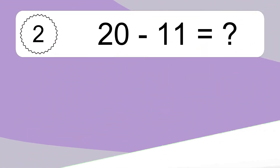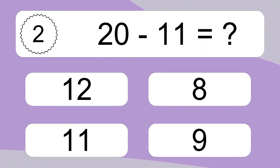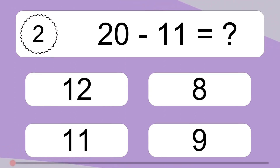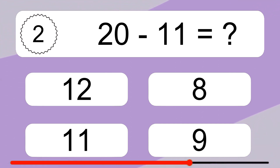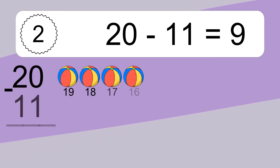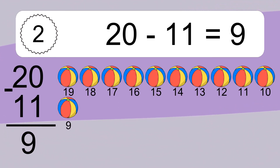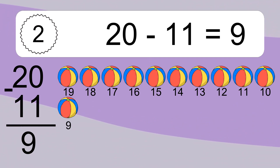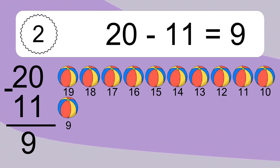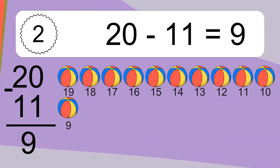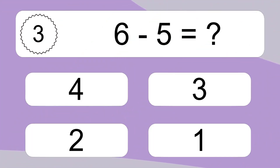20 minus 11 equals what? 20 minus 11 equals 9. Let's count it. 19, 18, 17, 16, 15, 14, 13, 12, 11, 10, 9.